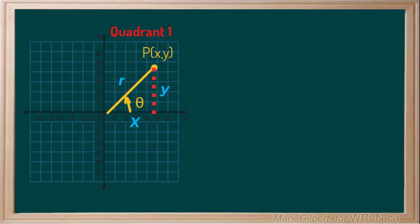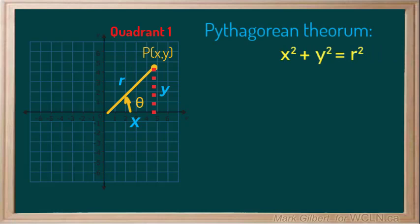We can always find R using Pythagoras. X squared plus y squared equals R squared. We can square root both sides and we get R is equal to the square root of x squared plus y squared.